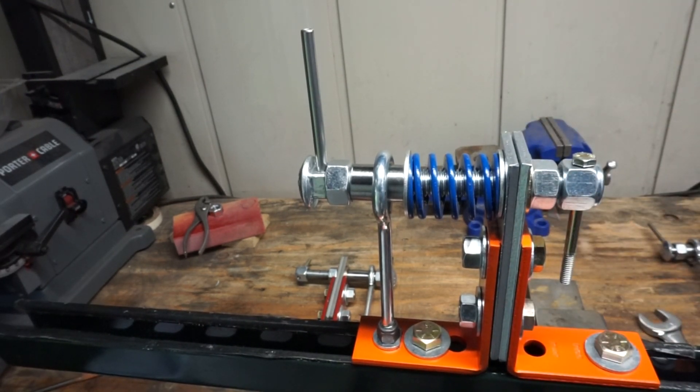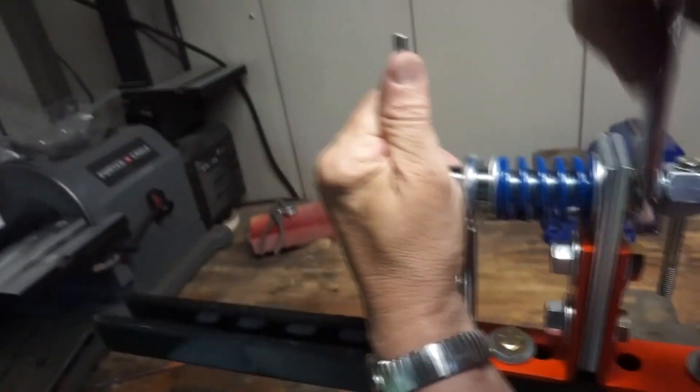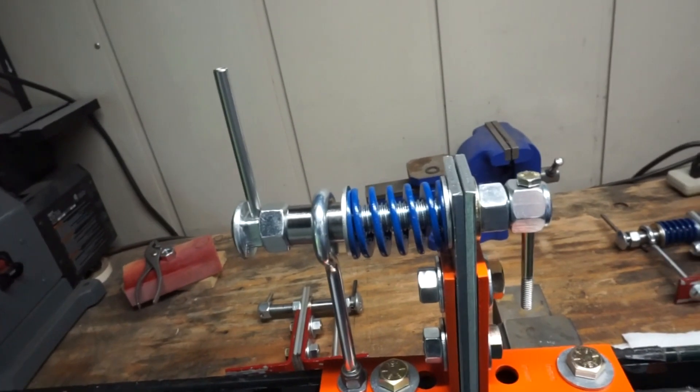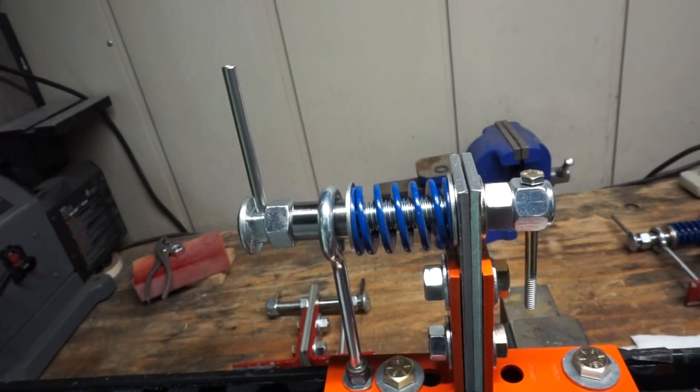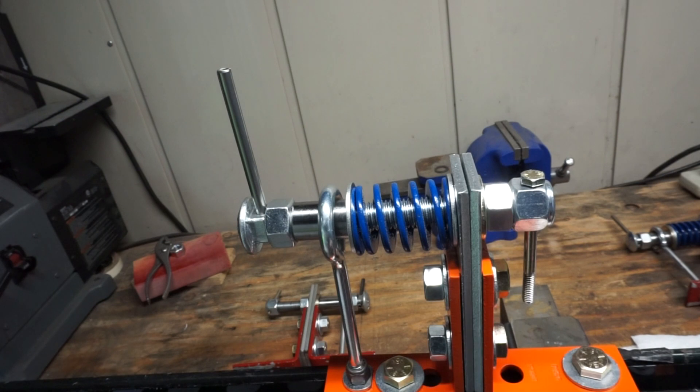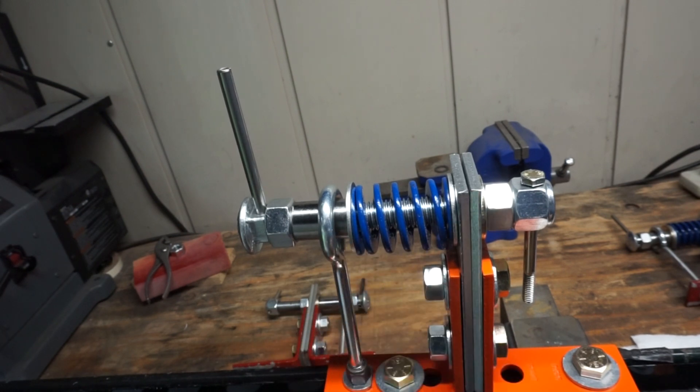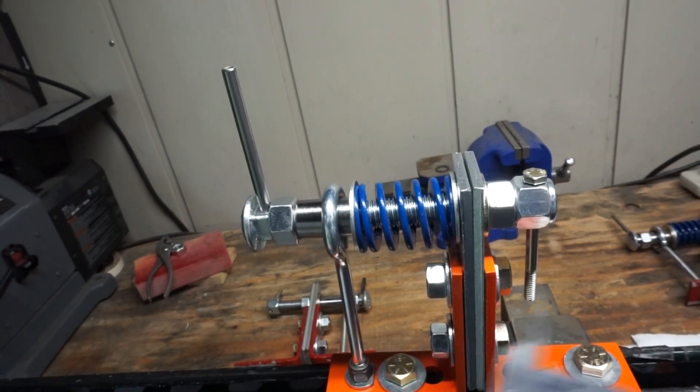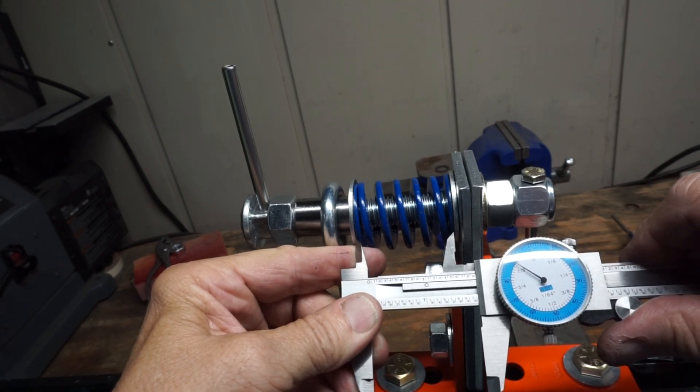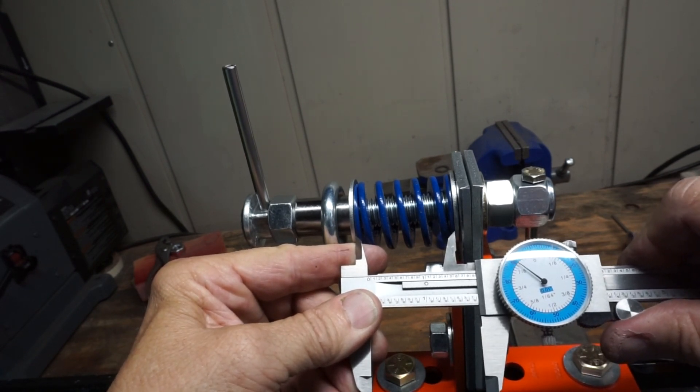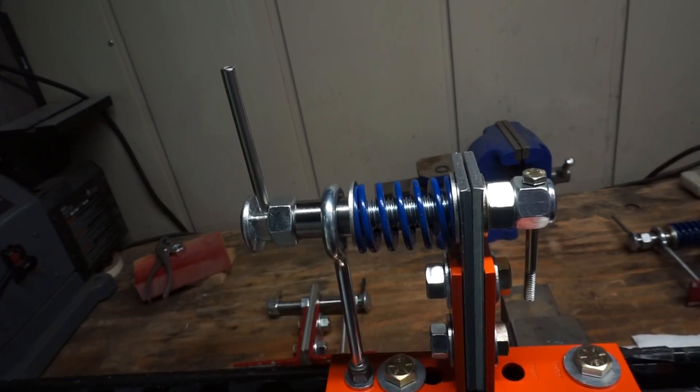And now I'm going to back out on this until—all right, now I want to focus my attention right now on the length of my spring under compression, blue to blue. I want it to be an inch and seven-eighths. And it just so happens that on this spring, I'm just about perfect. I'm a 32nd of an inch too long, I can live with that.